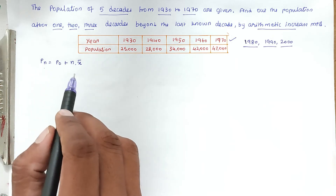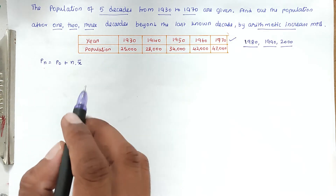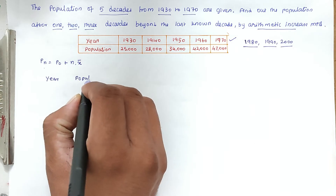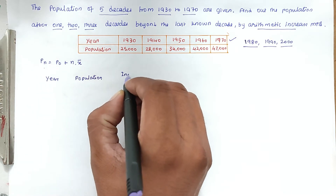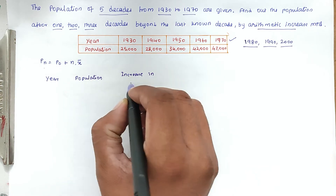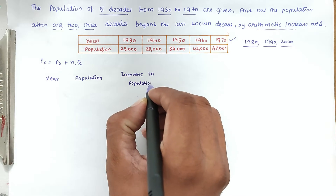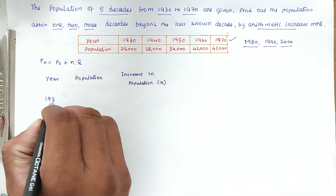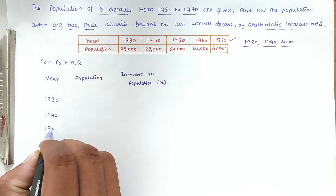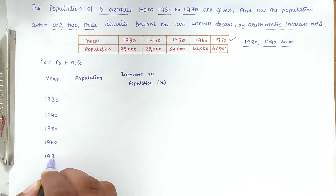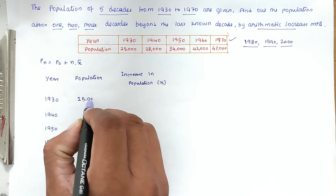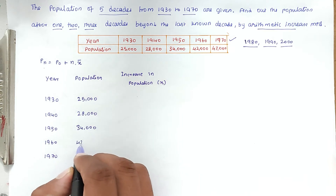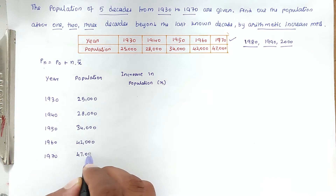We set up a table with three columns: Year, Population, and Increase in Population (x). The years are 1930, 1940, 1950, 1960, and 1970, with corresponding populations of 25,000; 28,000; 34,000; 42,000; and 47,000.